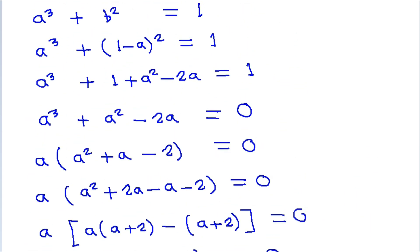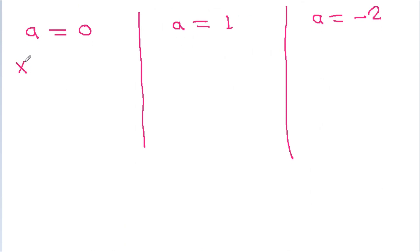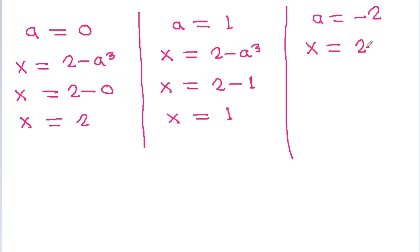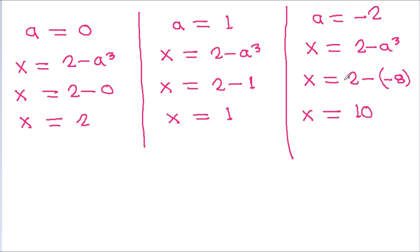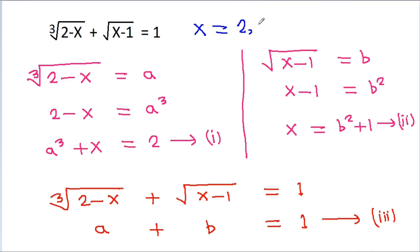From here we can get x equal to 2 minus a cubed. When a equals 0, x equals 2 minus 0, so x equals 2. When a equals 1, x equals 2 minus 1, so x equals 1. When a equals minus 2, x equals 2 minus (minus 2) cubed, which is 2 minus (minus 8), so x equals 10. Therefore x equals 2, 1, or 10.